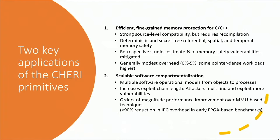The two key applications of CHERI are fine-grained memory protection for C and C++ with strong source-level compatibility, and scalable compartmentalization. We require recompilation to gain the benefits of CHERI, but those benefits are quite strong. In particular, we don't depend on cryptographic keys that could be leaked or guessed — unlike pointer authentication or ASLR — so every protection with CHERI is deterministic. Retrospective studies show that CHERI protections eliminate about two-thirds of memory safety vulnerabilities, which is about half of all vulnerabilities in a typical C or C++ codebase.